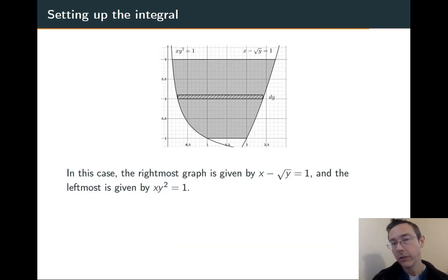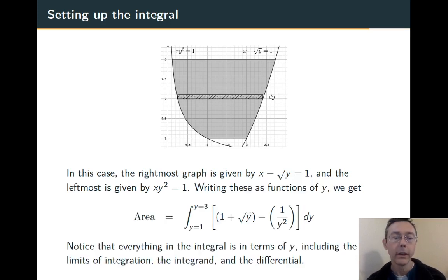Okay, so let's actually set this up. We're going to take these two equations, x minus root y equals one, and xy² equals one, and think of them as functions of y to get x equals one plus the square root of y and x equals one over y². Plug those in for the right curve and left curve. The right curve again is one plus the square root of y, the left curve is one over y². To get an integral that we can actually work with.